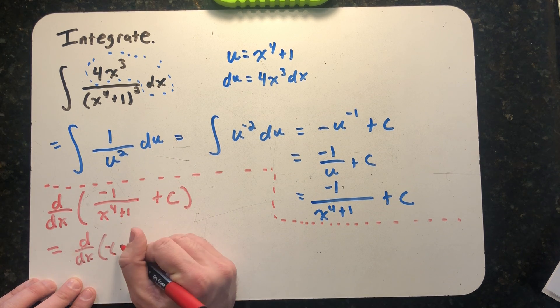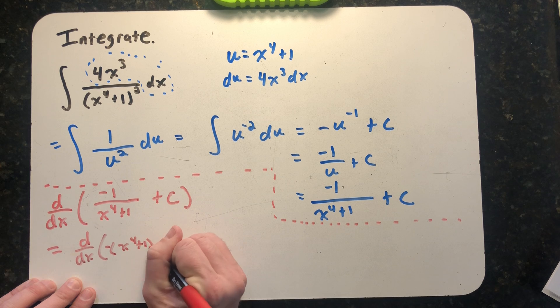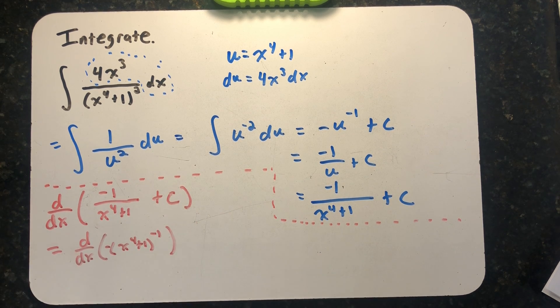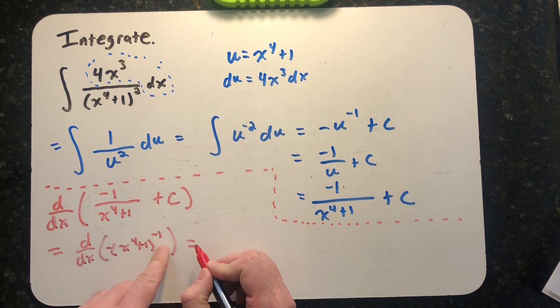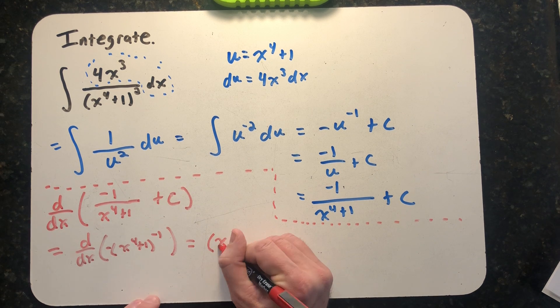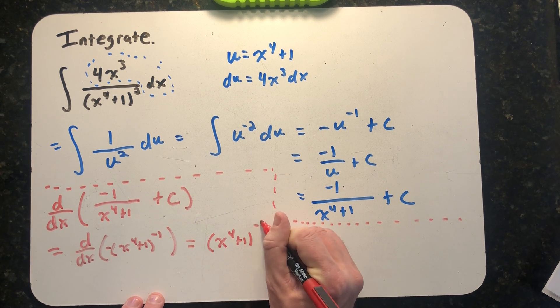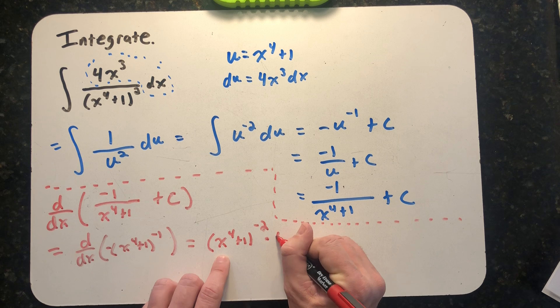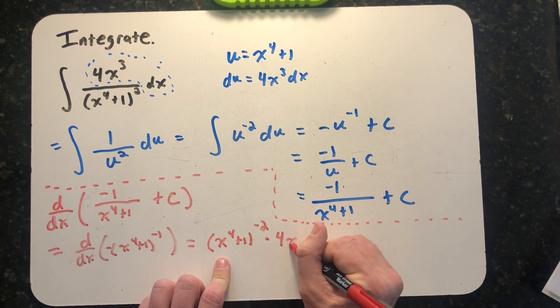I'm going to rewrite this so I can use the chain rule rather than the quotient rule. Taking that derivative, the power rule says multiply that exponent down—negative one times negative one gives positive—take one away from the exponent, times the derivative of the inside, 4x³.